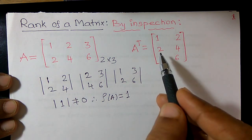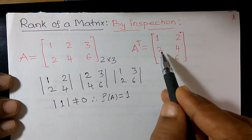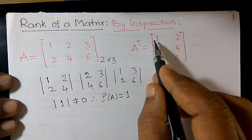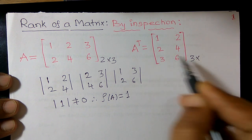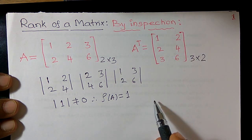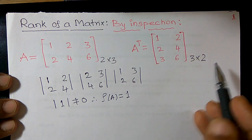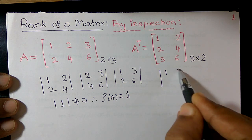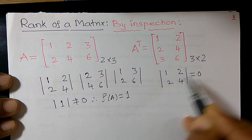Now they have given another matrix. It contains 1, 2; 2, 4; 3, 6 — that is 3 rows and 2 columns, so the order is 3 cross 2. I can construct one possible minor: 1, 2, 2, 4. I expect it equals 0: 1×4 = 4, 2×2 = 4, so 4 minus 4 = 0.